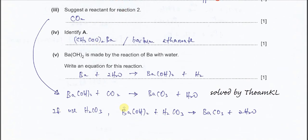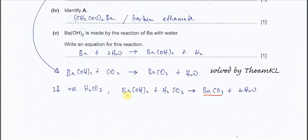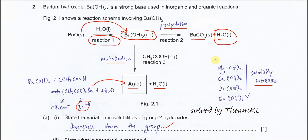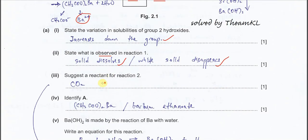Some may ask about carbonic acid — carbonic acid, when it reacts with barium hydroxide, can also form barium carbonate. Carbonic acid is not really a bad answer because from the equations, when barium hydroxide reacts with carbonic acid it will form barium carbonate and two moles of H₂O. But if CO₂ gas reacts with barium hydroxide, it forms barium carbonate and one mole of H₂O, which fits Figure 2.1. So it is better to put CO₂ as the reactant.